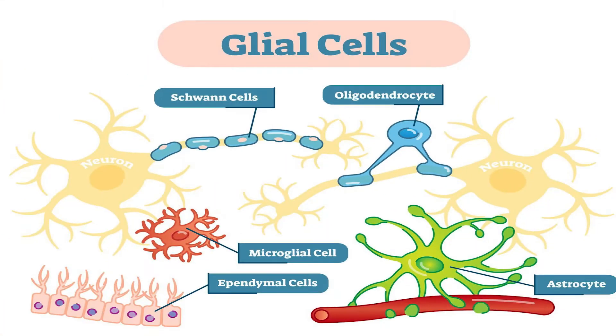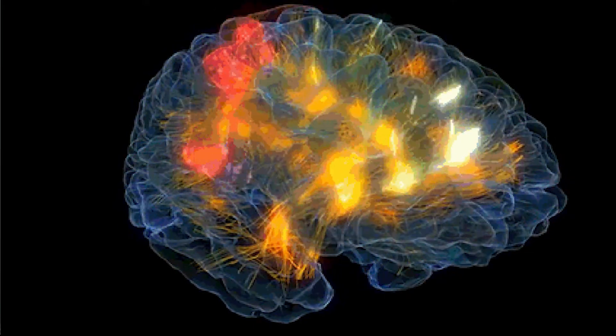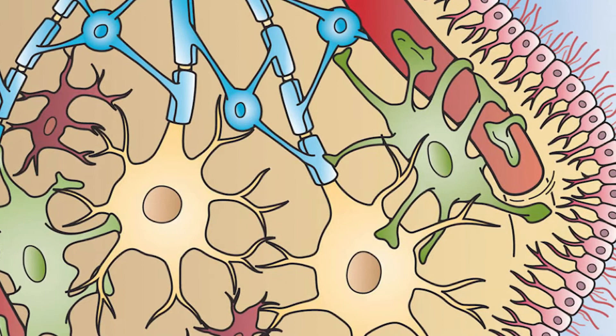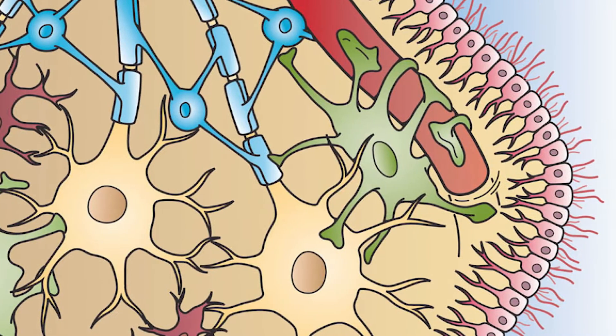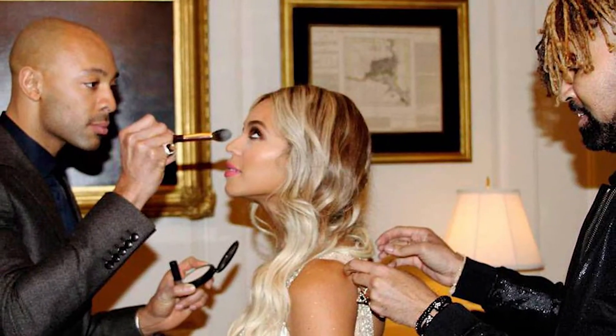First and foremost, the definitions required for an understanding of this topic will be given. Glial cells, or neuroglia, are non-neuronal cells found in both the central and peripheral nervous systems. Unlike nerve cells, they do not produce electrical impulses. Rather, they are a set of support cells that protect and supplement neuronal function. As an analogy, if neurons are the Beyonce of the brain, then the glia are her entourage.